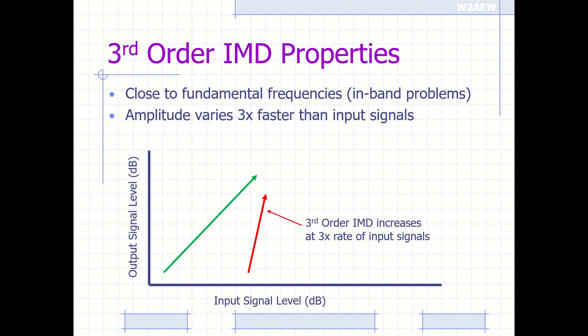If you extend these characteristics up to a point where they actually cross, that's called the third-order intercept point. It's often a theoretical point in power because circuits will often limit or compress before you get to that point, but it's a decent figure of merit for RF devices like mixers and amplifiers.